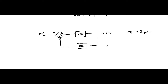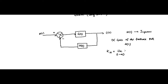Here an important term comes into play, which is called the DC gain of the feedback path. The DC gain of the feedback path H(s), denoted k_h, is determined by the final value theorem. It is given as: limit s→0 of H(s). This applies for a type 0 system — when H(s) has no pole at the origin.